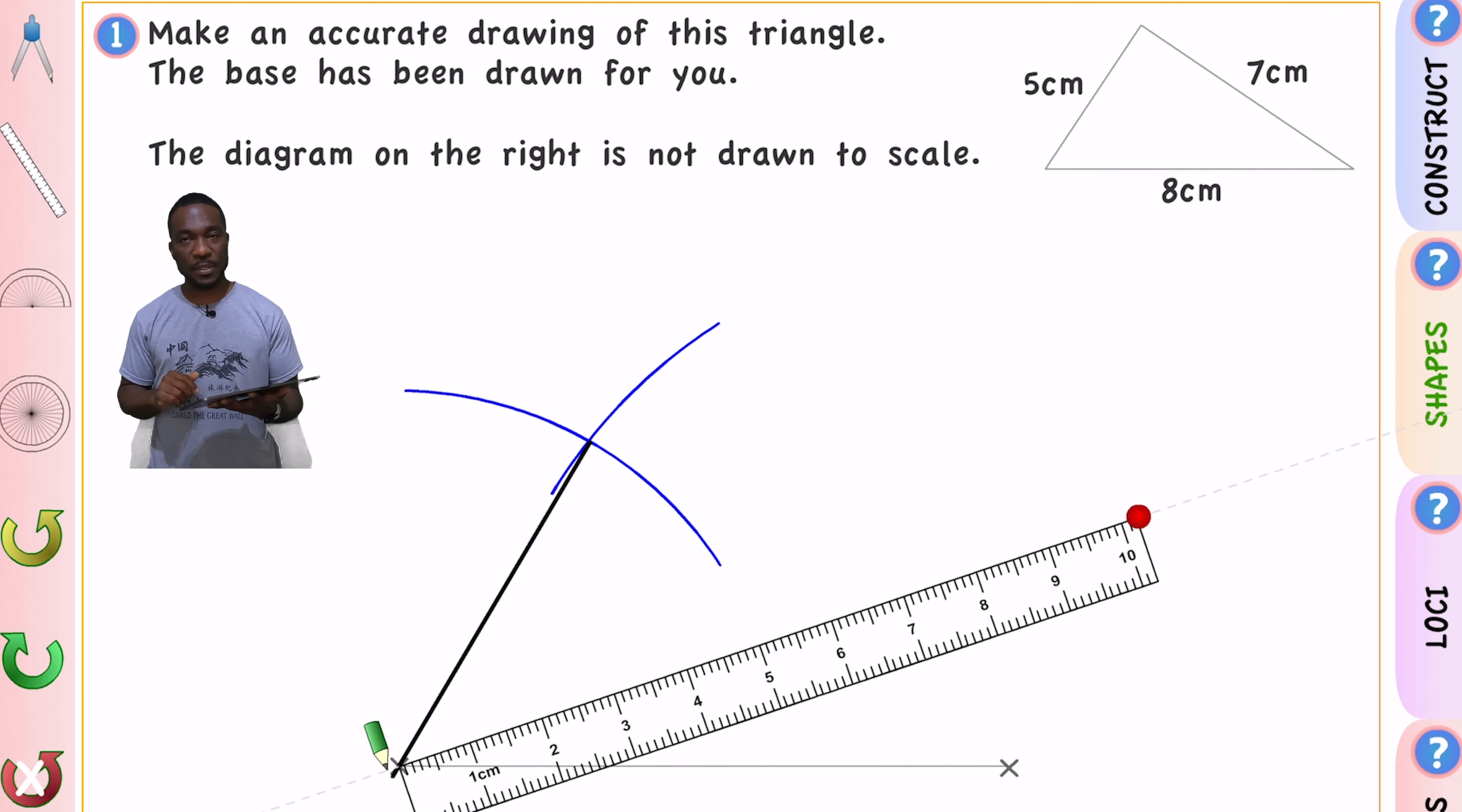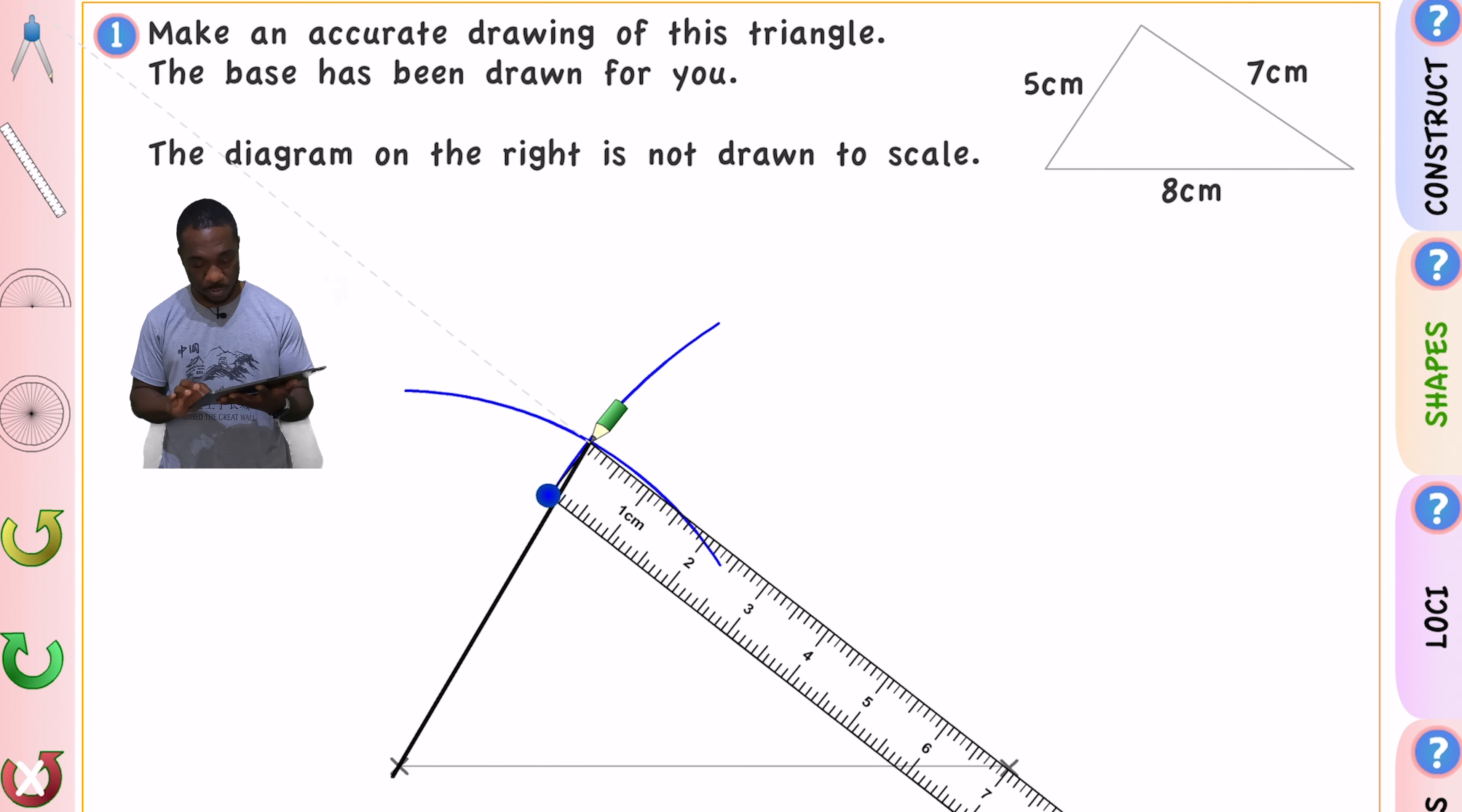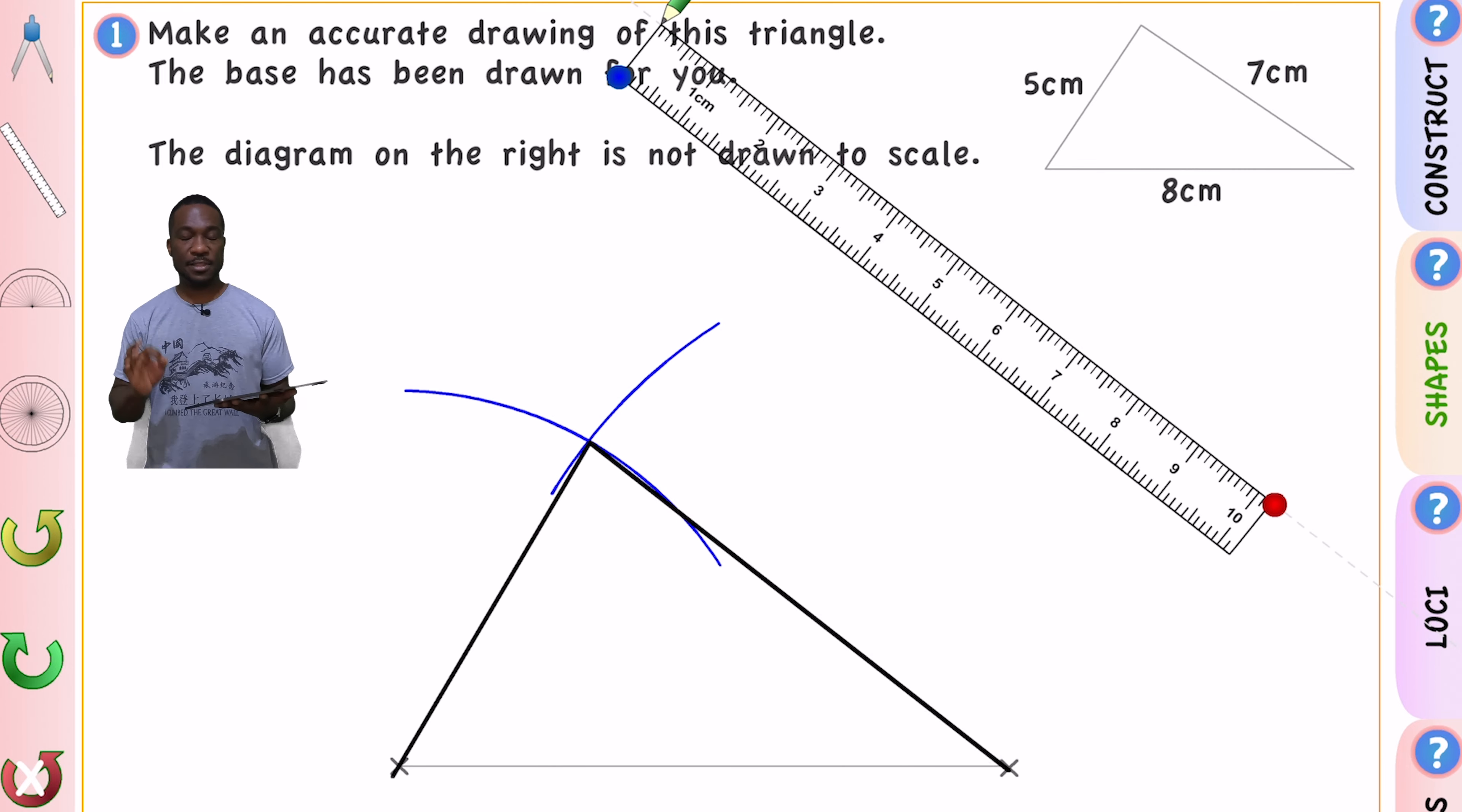Now once we got that I'm going to do the same on the other side. So I'm just going to get my ruler in line here and because I'm working with a virtual instrument it takes me a little while to get it on point. I'm happy with that and draw that going down there and just like that that's my triangle done. Let's move on to the second question.